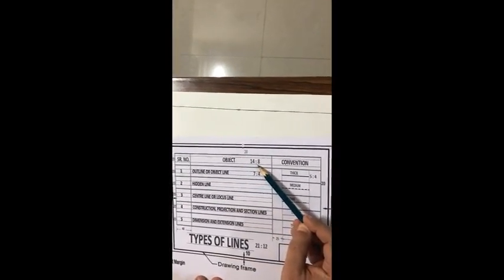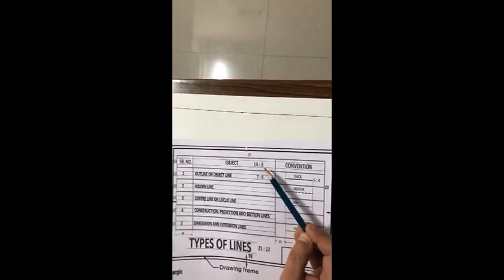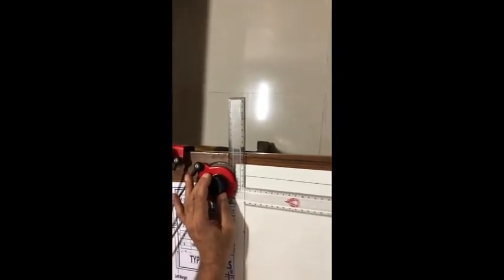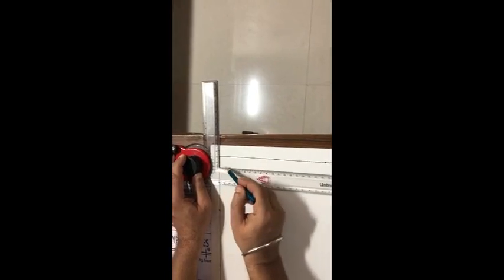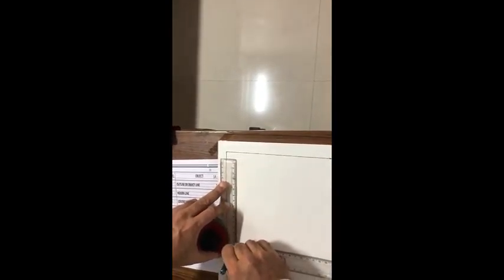We had 6 rows before, but now we are going to draw 11 rows. I'll keep the reference sample here. As mentioned, we need to keep a 20 mm minimum gap on either side — so this is 20 mm here and 20 mm here. I have marked a point, and now I need 11 rows, so I'll bring this down using an HB pencil — 15 centimeters first.